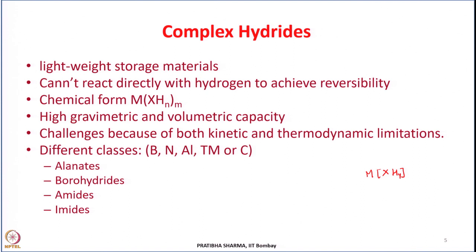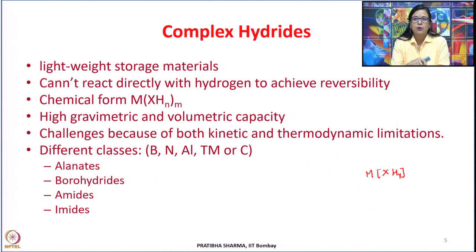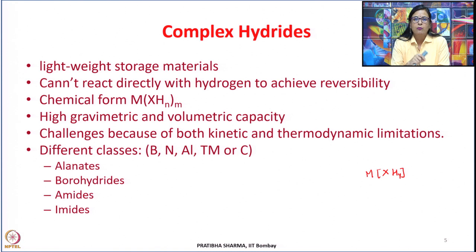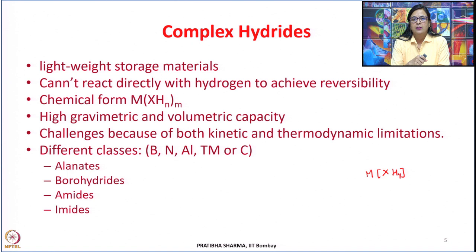Complex hydrides do not directly react with hydrogen to achieve reversibility. At the same time, complex hydrides are formed from lightweight elements — a major disadvantage of metal hydrides was poor gravimetric capacity because the transition metals and other elements used were heavy. However, the elements used in complex hydrides are lightweight, and as such the gravimetric capacity of complex hydrides is higher, as well as the volumetric capacity.